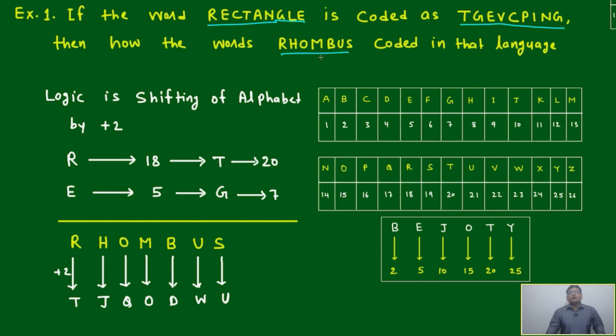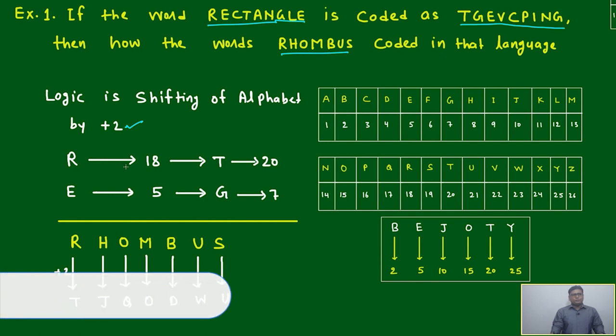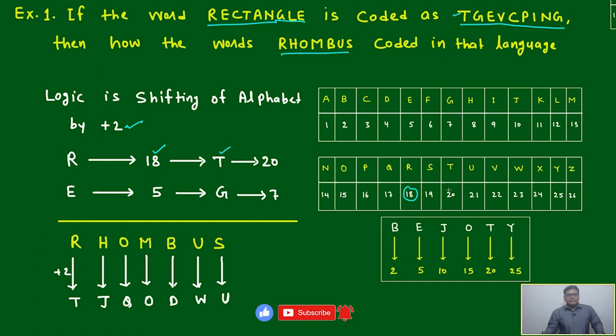The logic is shifting of alphabet by plus 2, just by observation. Here R is representing 18, and it is shifted to T which represents 20, meaning it is a change of plus 2. The first letter changes by plus 2.